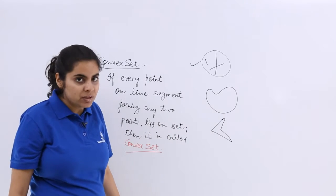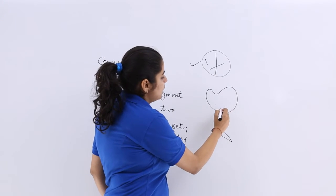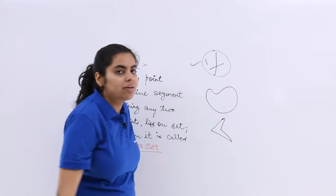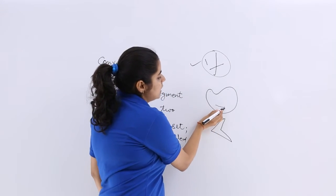Next, let's move on to this diagram. If you take these two points, these two points, so these two points when joined are in the set itself.